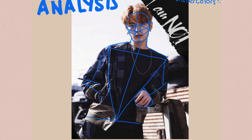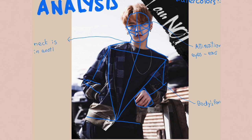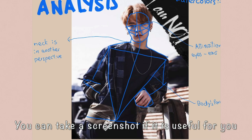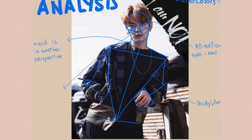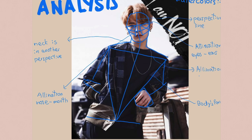There you can see a lot of lines and I'll explain what those lines mean. That's the alignment of the eyes and ears — it's very important. That's the body form — it's a triangle, or at least that's what I found. The neck is another line, and there the neck has a different perspective from the body, that's why I did two lines. That's the alignment of the nose and mouth — also really important — and that's a perspective guideline.